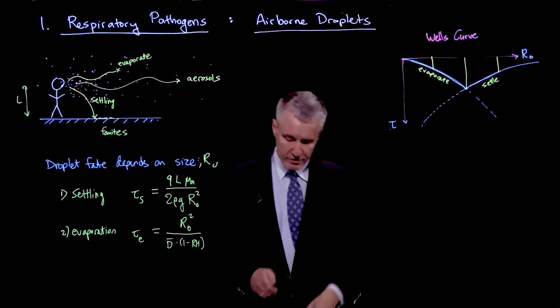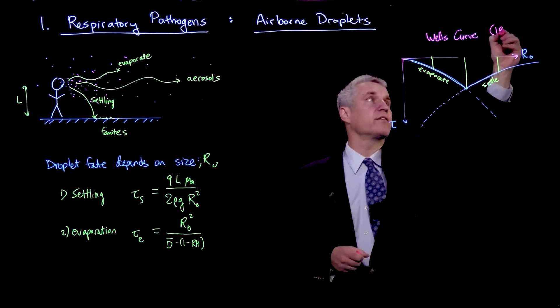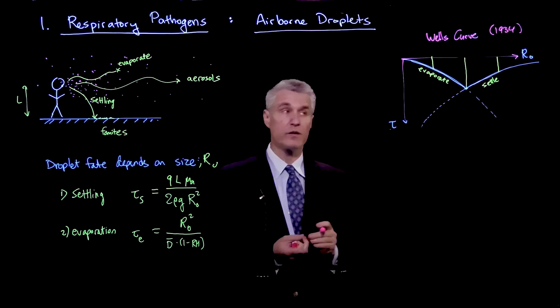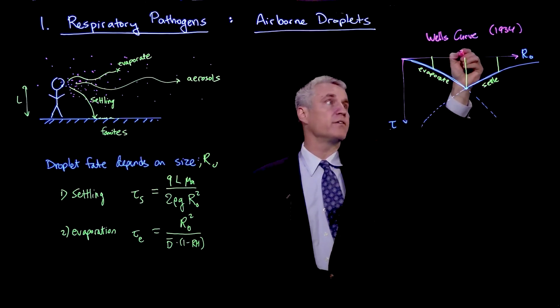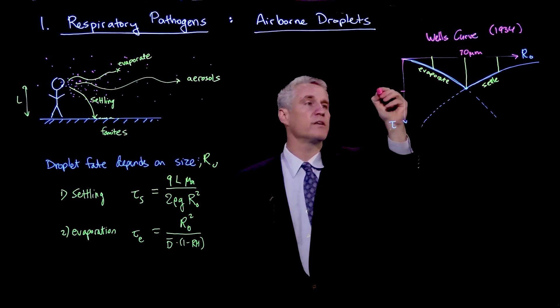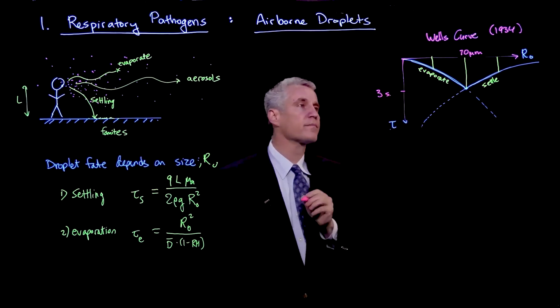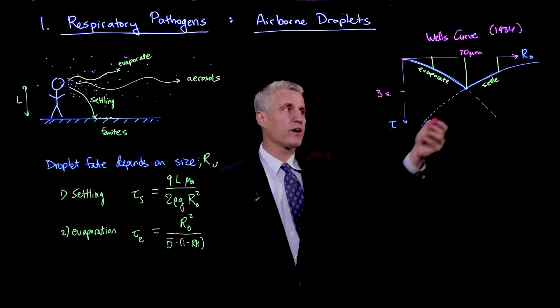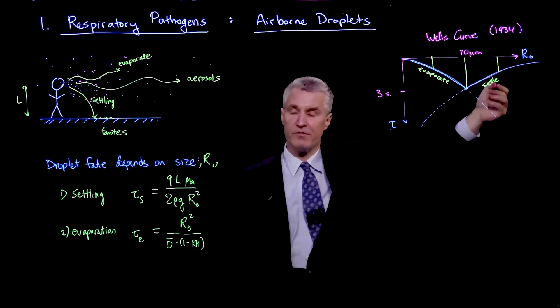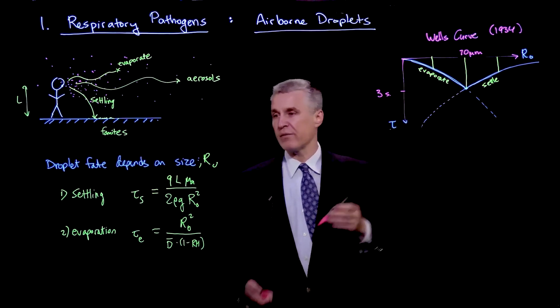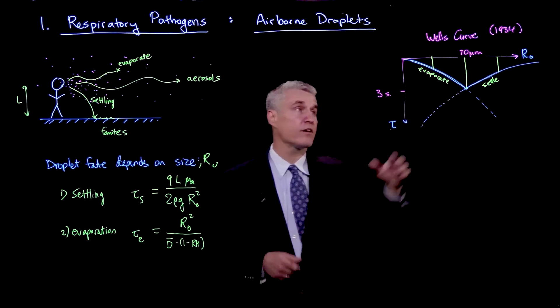So generically you expect this kind of behavior for droplets that are evaporating and settling. Now the Wells curve was first formulated in 1934. And if we just want to put some numbers on here, if we're talking about pure water, then this crossover happens around 70 microns and the time is around 3 seconds. So that gives you a sense, basically, of how quickly the larger droplets are settling faster than 3 seconds, and then the small droplets are evaporating a lot faster.